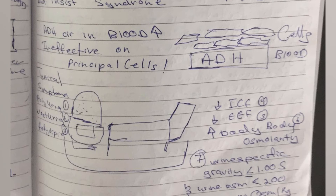Number three, polydipsia: obviously if you're losing water you're going to be very thirsty — represented by the cup, because when you're thirsty you get a cup of water. Intracellular and extracellular fluid decrease, osmolarity increases. The sixth symptom is increased body osmolarity, represented by dots. The seventh is that urine specific gravity will be less than 1.005 and urine osmolarity will be less than 200, indicated by the cup which can also be thought of as a weighing machine.